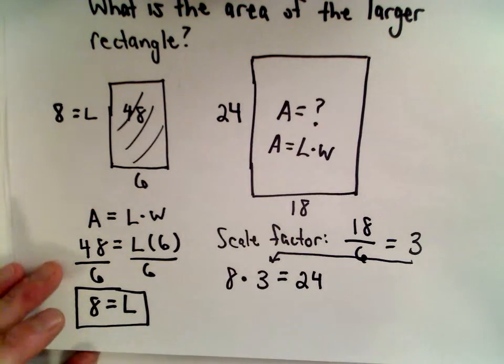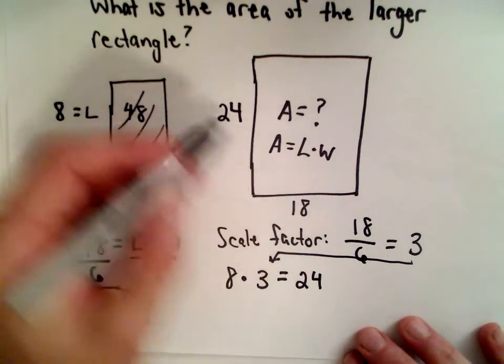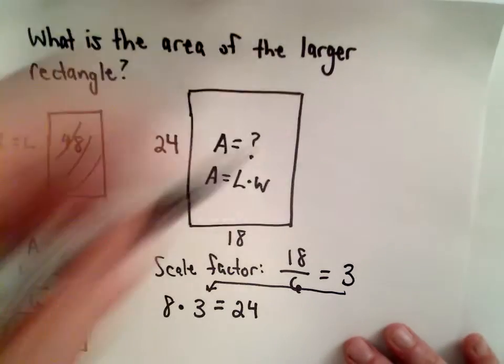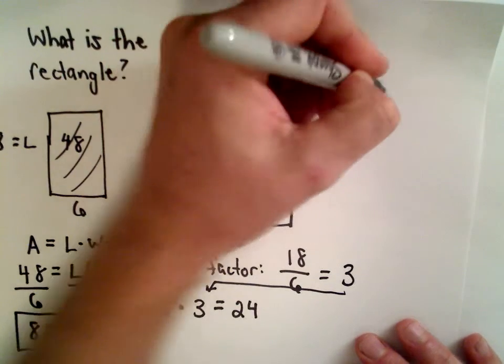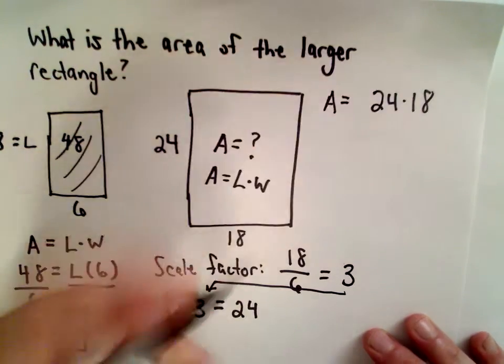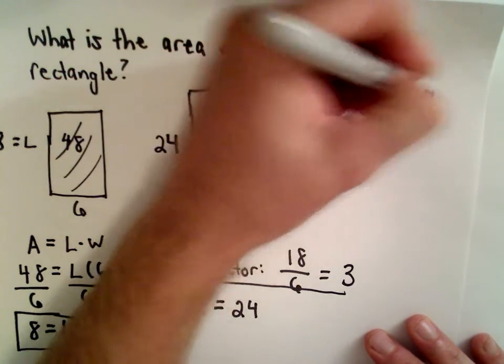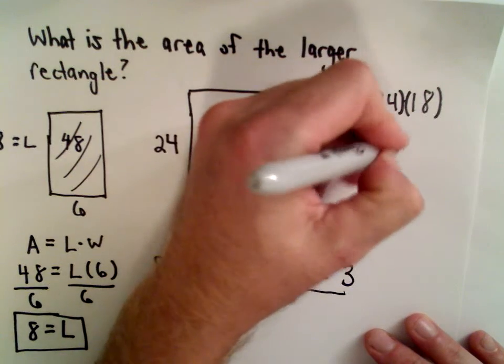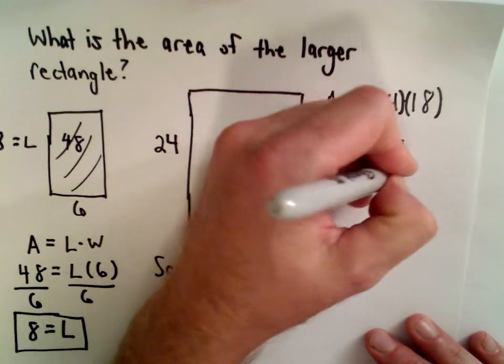So now we're almost there. Now to figure out the area, I'm just going to take 24 and multiply that by 18. So let's set this up here. So 24 multiplied by 18.